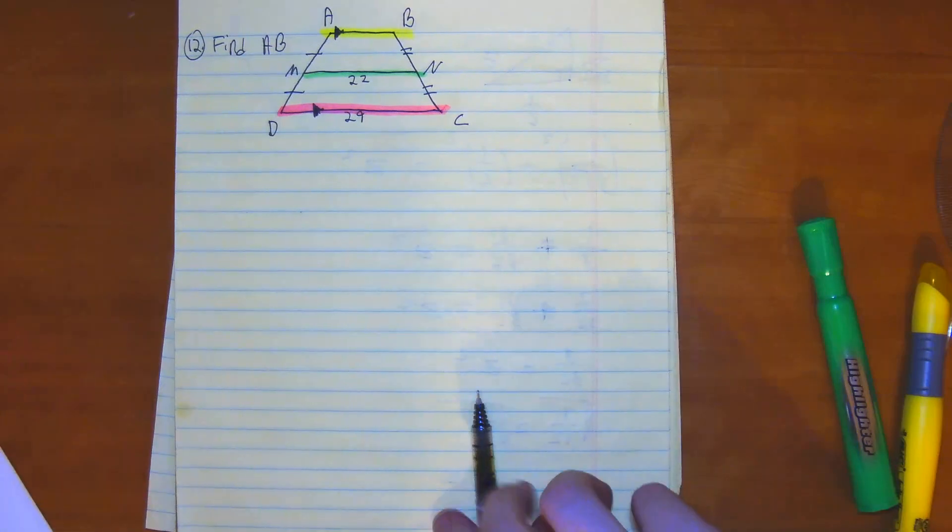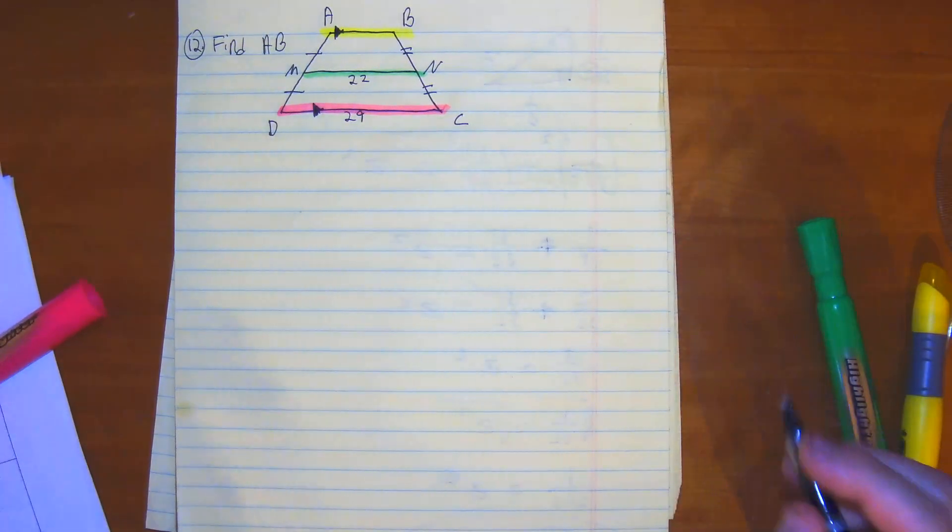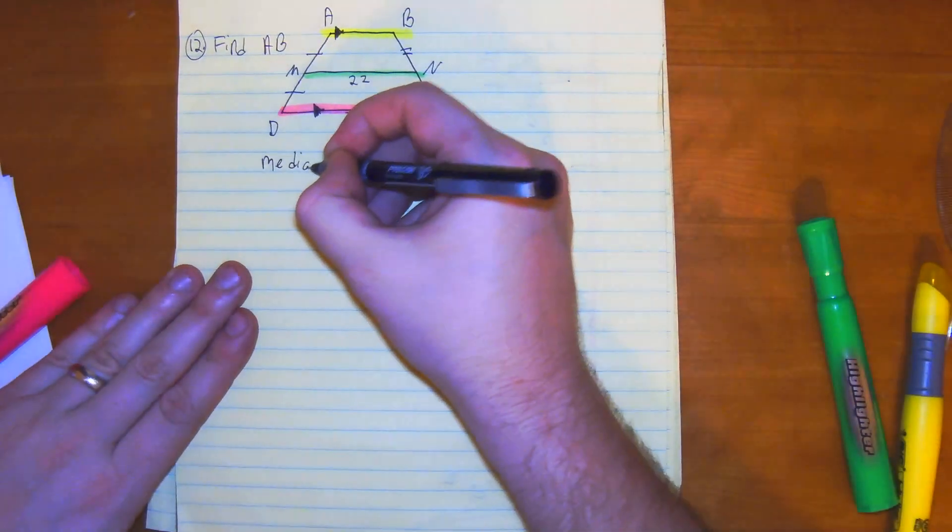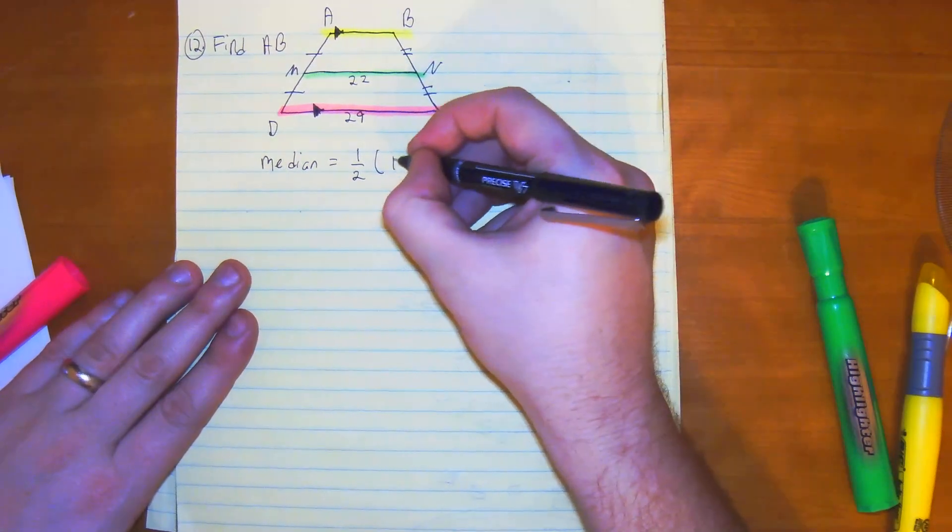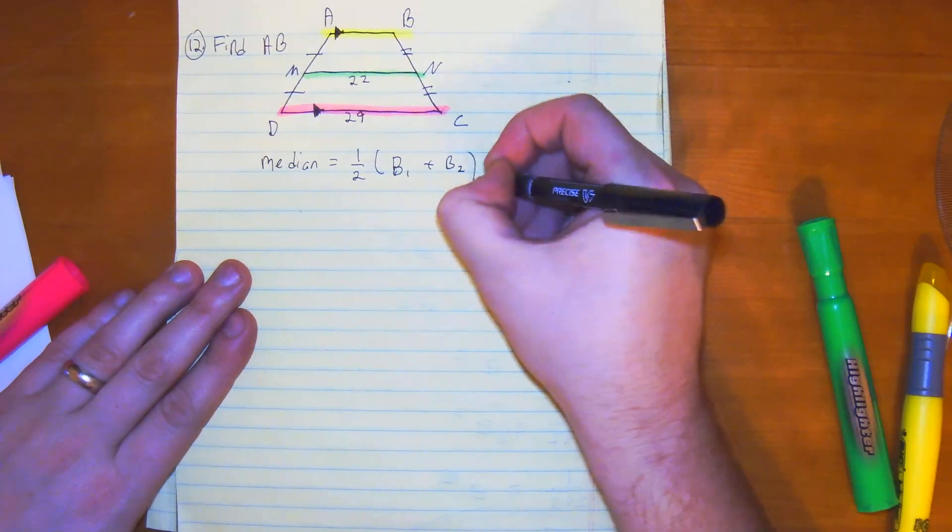So to find AB, we do have to use the median formula, which states the median is equal to one-half of base 1 plus base 2.